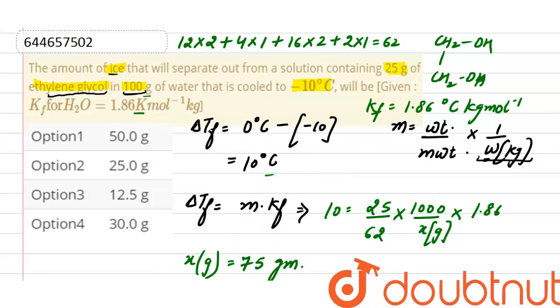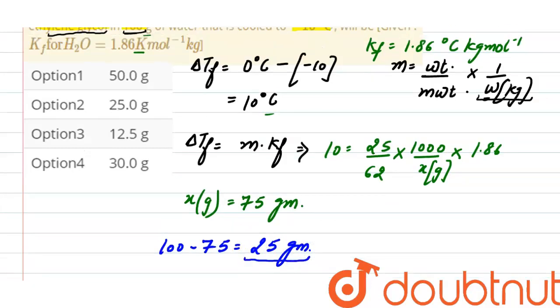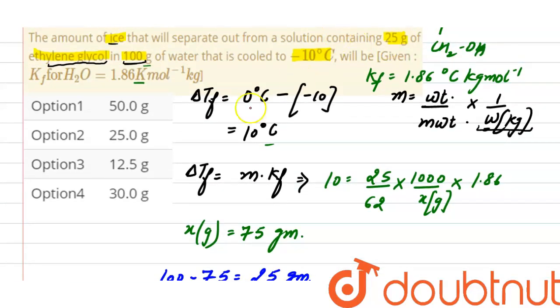In 75 gram of water, ethylene glycol is present. And from total mass of solvent that is 100 grams, in 75 gram ethylene glycol is present and remaining 25 gram is present as ice that will separate out. And the correct option here will be option 2.